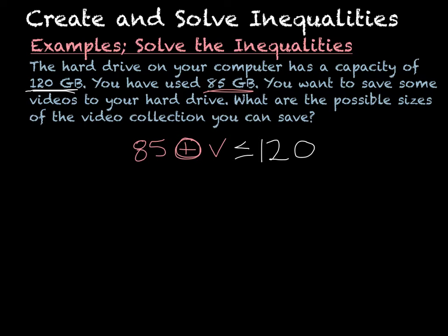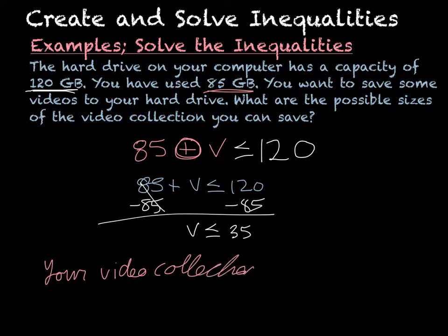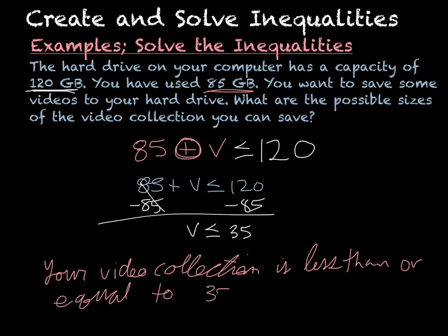So the equation I'm actually going to be solving is 85 plus V is less than or equal to 120. I got that from the problem. Now I solve: subtract 85 from both sides and I get V is less than or equal to 120 minus 85, which is 35. So your video collection has to be less than or equal to 35 gigabytes. And that's your final answer.